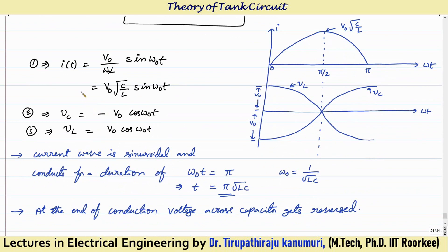Summarizing: the current equation is I(t) = V naught·√(C/L)·sin(ω₀t) — it follows a sine wave starting from 0 at ω₀t=0, reaching peak value V naught·√(C/L) at ω₀t = π/2, and returning to zero at ω₀t = π. The circuit conducts for a duration of π√(LC) seconds. The capacitor voltage VC = −V naught·cos(ω₀t) starts from −V naught and by the end of conduction gets reversed to +V naught. The inductor voltage VL = V naught·cos(ω₀t) goes from +V naught to −V naught.